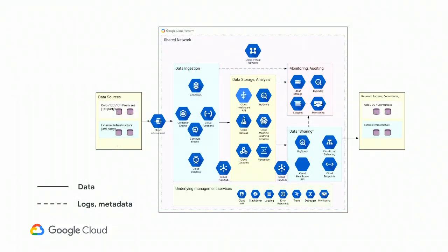Tying it all together — how can something like this look? The user journey is: you have some data that exists off Google Cloud, perhaps on-prem, in a colo, in your own data center, on a third-party infrastructure, or on another cloud. You want to move that data to cloud, get a canonical data storage platform, then make that data available to research partners, to your own organization, to third-party services — while maintaining HIPAA or GDPR. I've broken this up into four GCP projects: data ingestion, data storage and analysis, data sharing, and monitoring and auditing, with underlying management services like our logging platform, IAM platform, and Stackdriver services for debugging and monitoring.